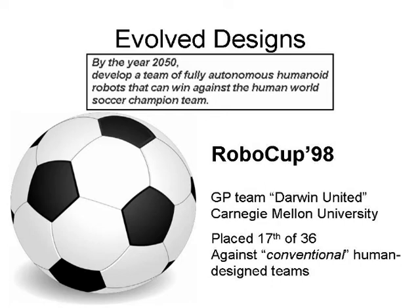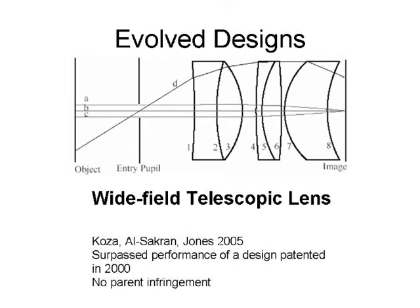Another example is RoboCup, which is a simulated soccer tournament. Their goal is to develop, by the year 2050, a team of fully autonomous humanoid robots that can win against the human world soccer championship team. At the moment they have simulated matches where you submit an AI algorithm to play soccer. In RoboCup 98, a team that used genetic programming called Darwin United managed to place 17th out of 36 different submissions — right in the middle of the field — meaning they performed about as well as human-designed algorithms.